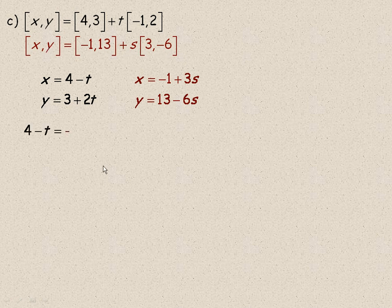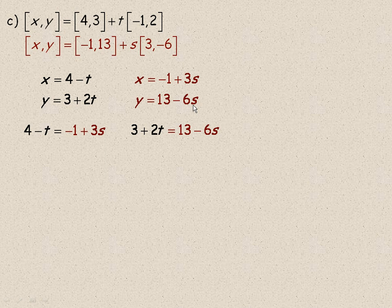And so we equate them just like we did in the previous example. 4 minus t gets equated to negative 1 plus 3s, and 3 plus 2t would get equated to 13 minus 6s. Again, we're trying to find the value of t that you put in the first one that gives you the same point when you put a certain number in place of s in the second. And so I'll rearrange.